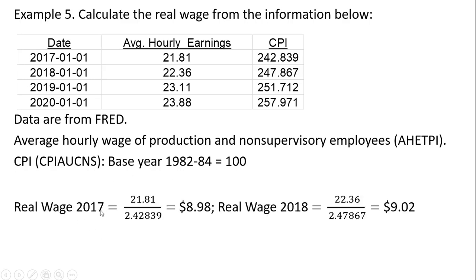So the real wage in 2017 is the nominal wage divided by the price level. But because the CPI here, the base level, is not 1 but 100, I'm going to first divide all of these values by 100. So this 242.839 divided by 100 gives us a price level of 2.42839, so after doing that we have a real wage of $8.98.